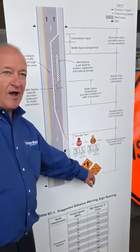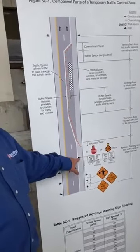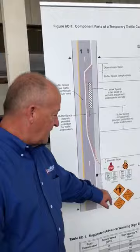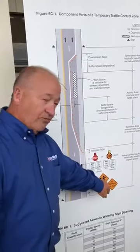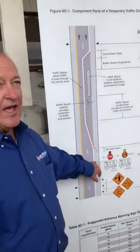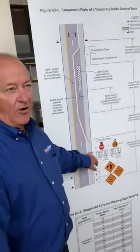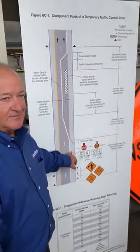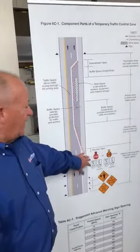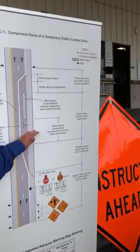The second sign is 'be prepared to stop,' because there's going to be a flagger there to stop traffic to one lane. Then your flagger symbol sign gives warning that you have a flagger standing there — because these guys are in the most danger. As much warning as you can give approaching the work area, the better it is for you guys to stay safe.